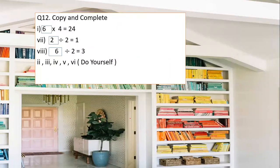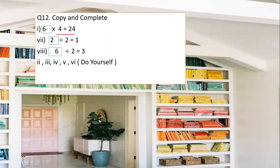Last question: copy and complete. A blank is given — blank multiplied by 4 equals 24. You have to write the answer in the blank. How many times does 4 go into 24? Four six times is 24, so I have written 6 in the blank.